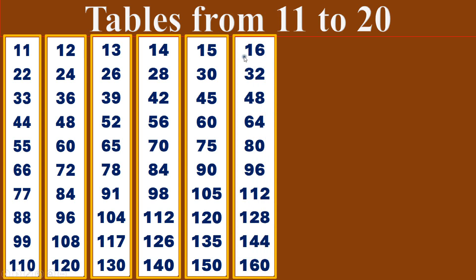Sixteen times table. Sixteen ones are sixteen. Sixteen twos are thirty-two. Sixteen threes are forty-eight. Sixteen fours are sixty-four. Sixteen fives are eighty. Sixteen sixes are ninety-six. Sixteen sevens are one hundred and twelve. Sixteen eights are one hundred and twenty-eight. Sixteen nines are one hundred and forty-four. Sixteen tens are one hundred and sixty.